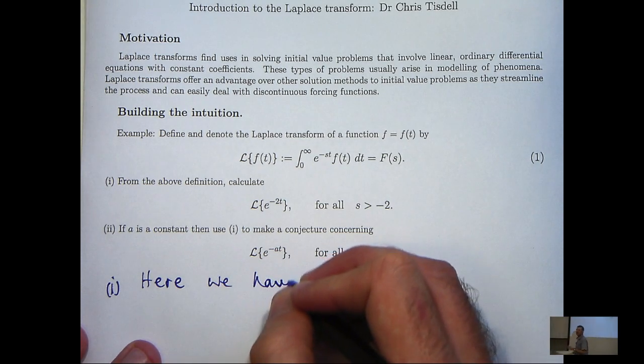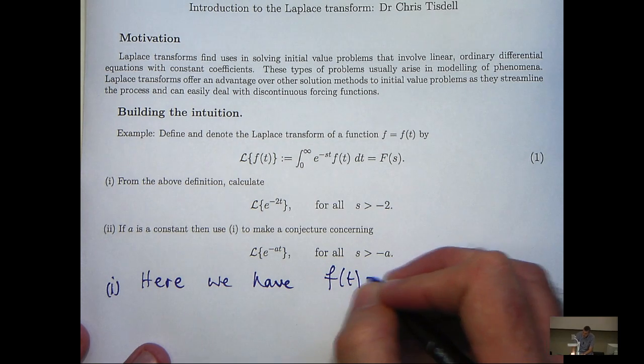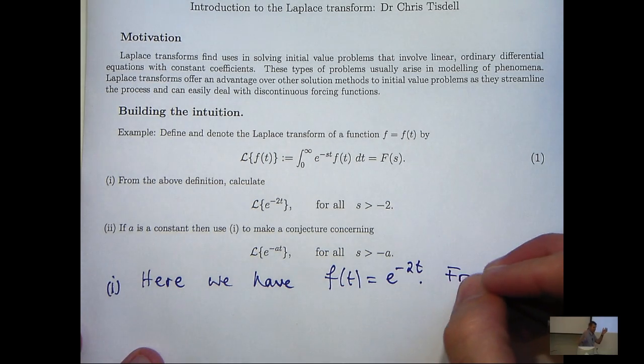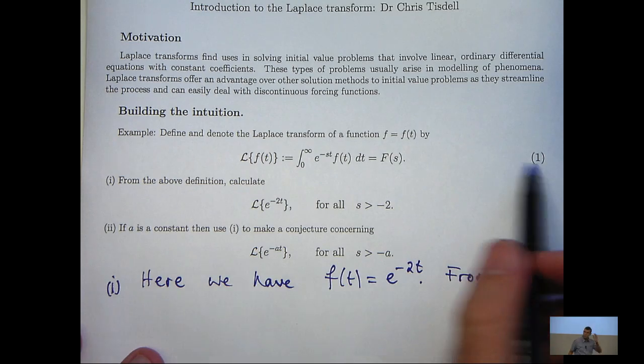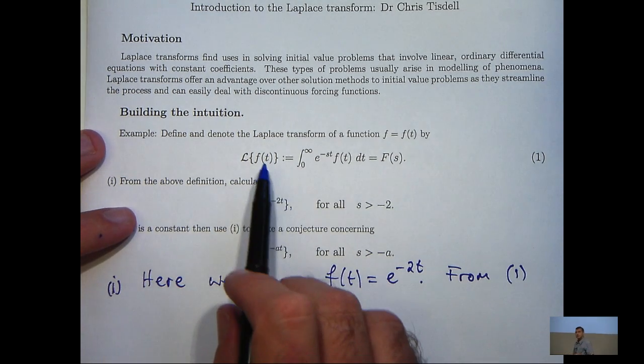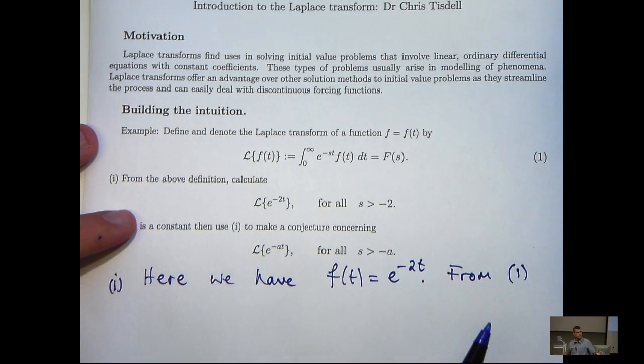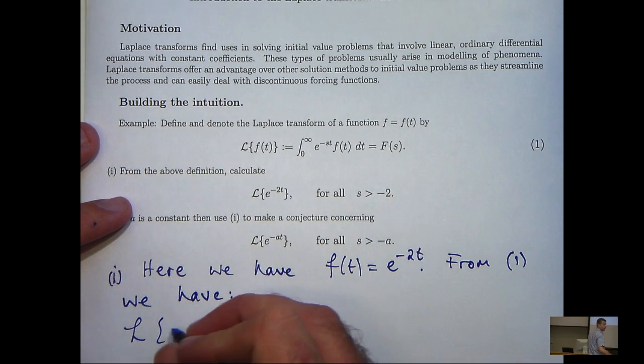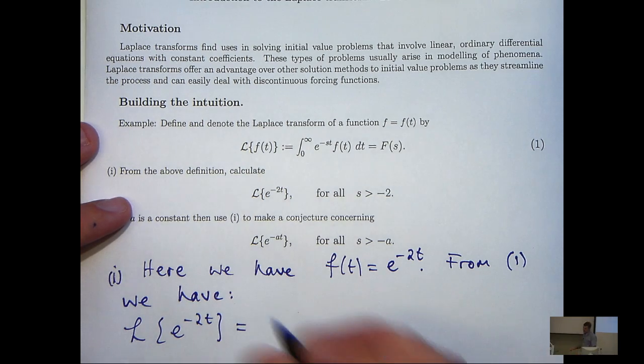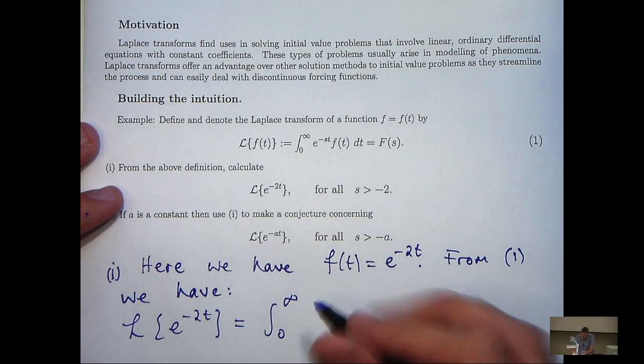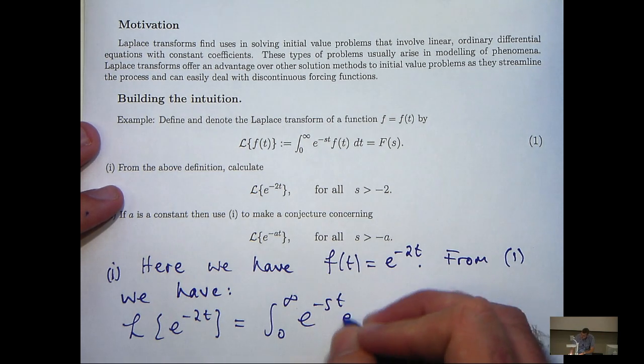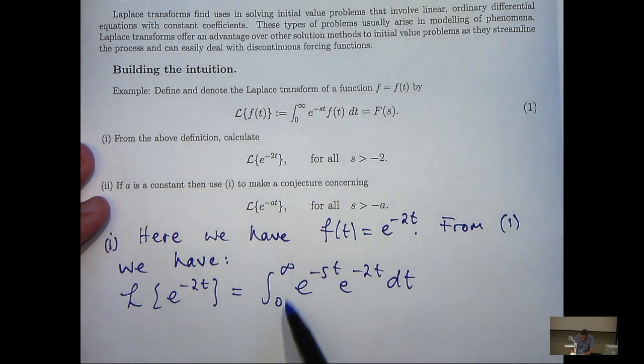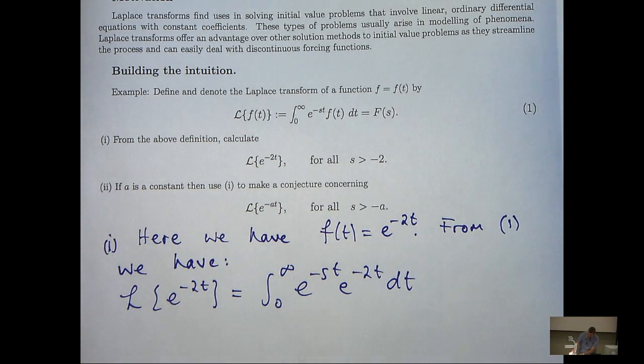So, in this example, we have little f is e to the minus 2t. So, if we look at our definition for the Laplace transform, we just replace little f of t with e to the minus 2t. Okay, so just replacing little f of t up here. We'll get this. Now, notice that we have what's known as an improper integral here. So we have to be careful with the calculations here.